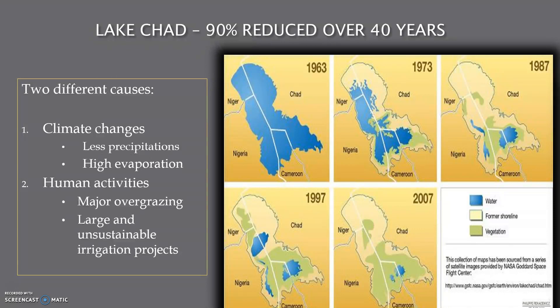The consequences of this ecological catastrophe include a lack of fresh water in the area, loss of crops, a collapse of fisheries, and water conflict between people and different countries. Possible solutions would be to develop sustainable use of the remaining lake's ecosystem, develop better sustainable agricultural practices, and try to set up a Lake Chad replenishment project.